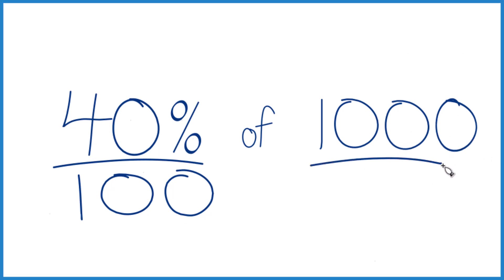But I have 1,000, so I need to move over one more place. So instead of 40, I have 400. So 40% of 1,000, that's 400.